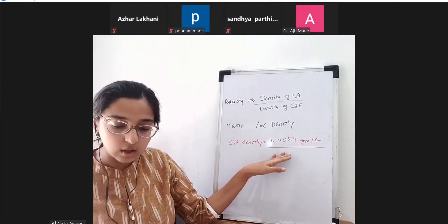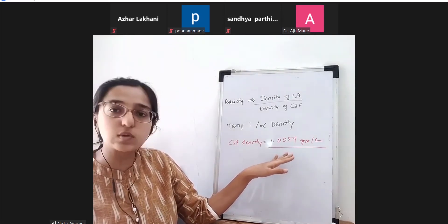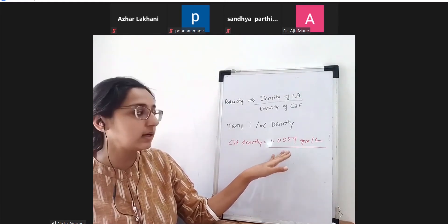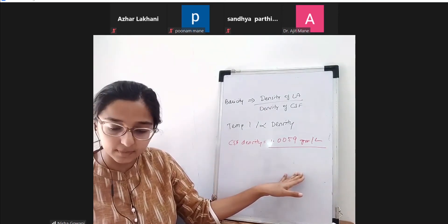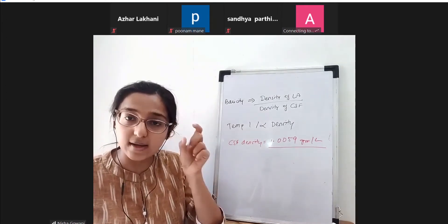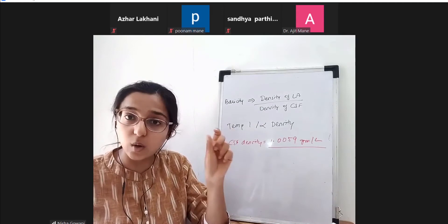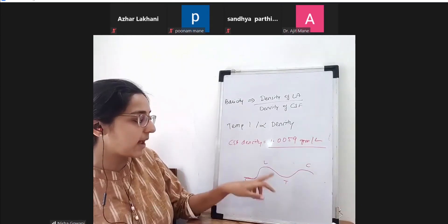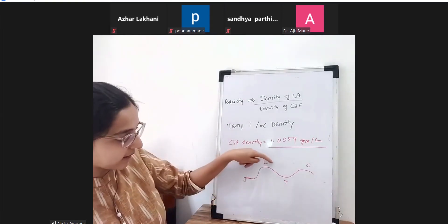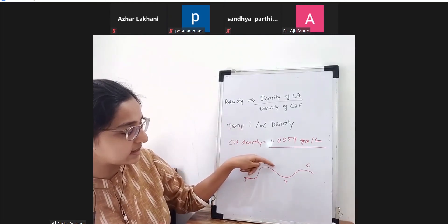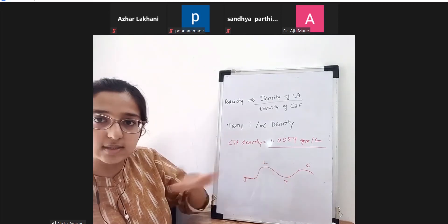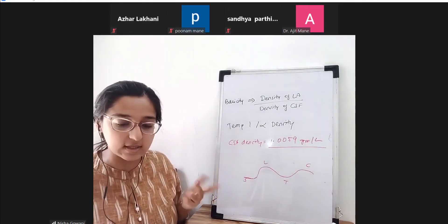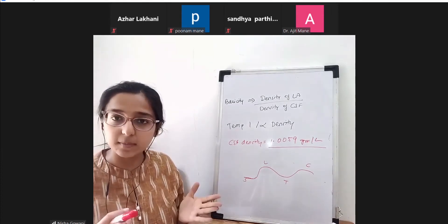If the density of the local anesthetic is more than 1.0059 g/mL it becomes hyperbaric; if the same, isobaric; if less, hypobaric. If you add dextrose to local anesthetic, it becomes hyperbaric. If you add distilled water, it becomes hypobaric. When a hyperbaric drug is deposited and the patient is supine, the drug is heavier than CSF and will dip down to the low point.